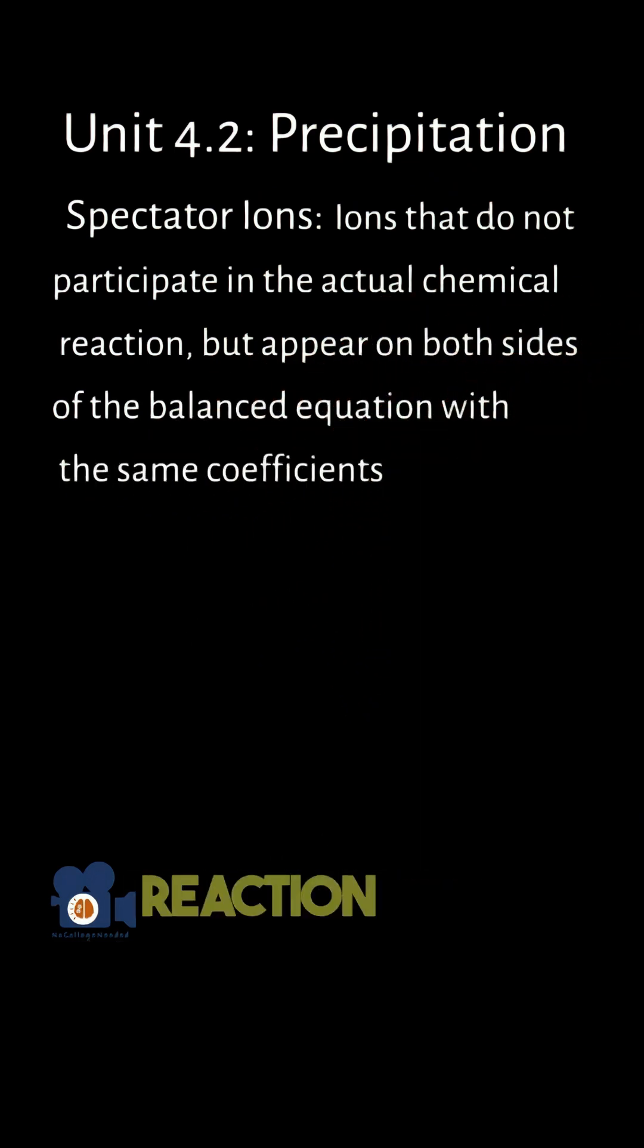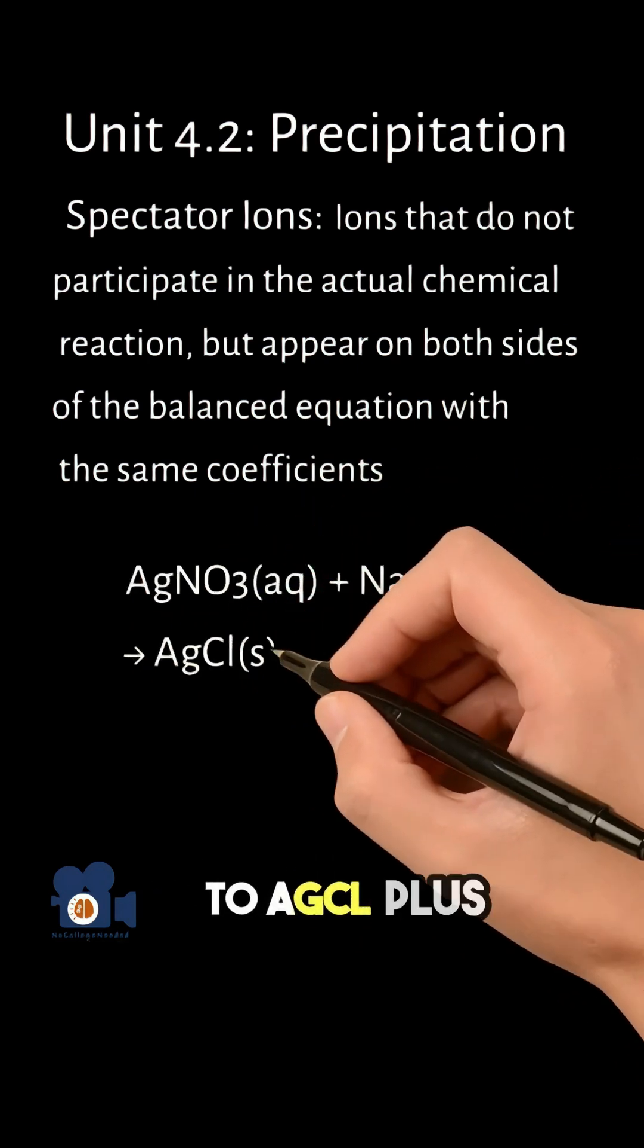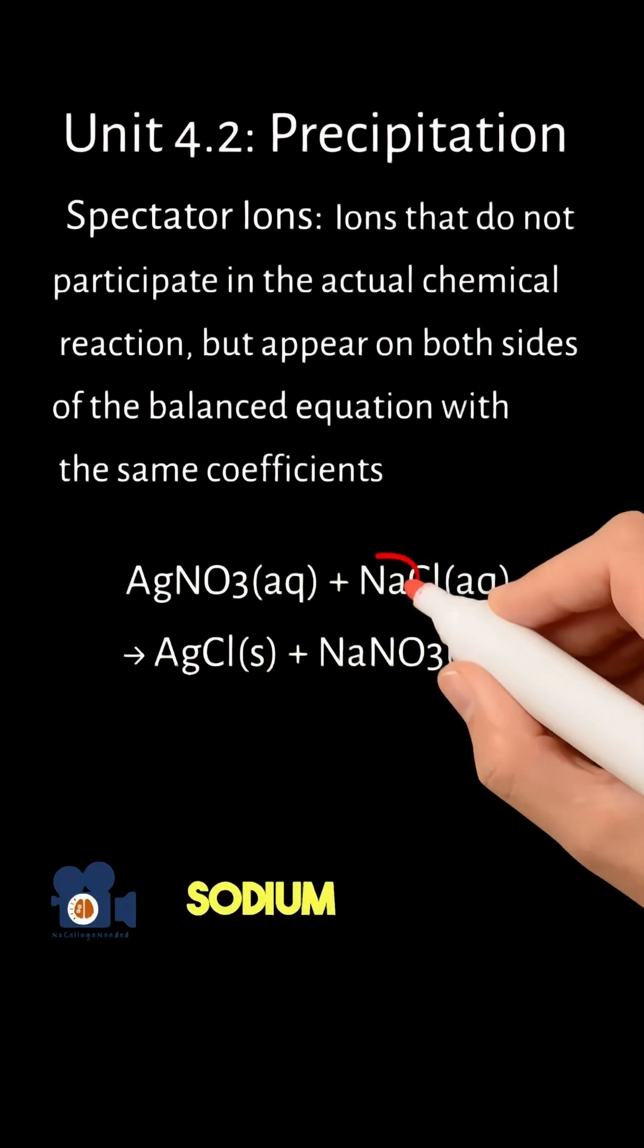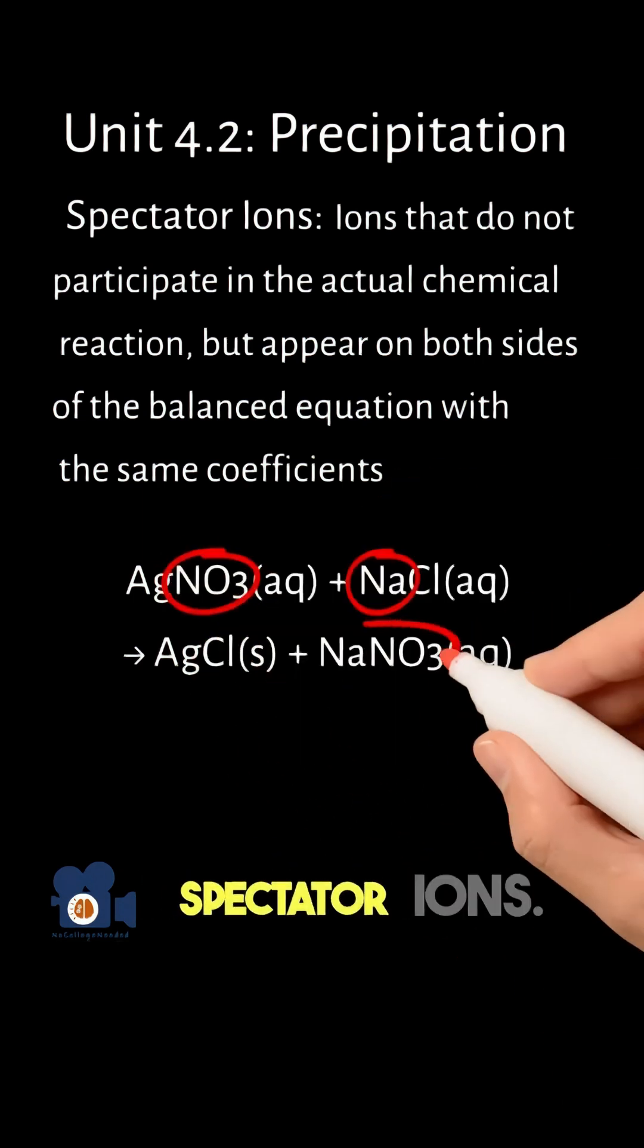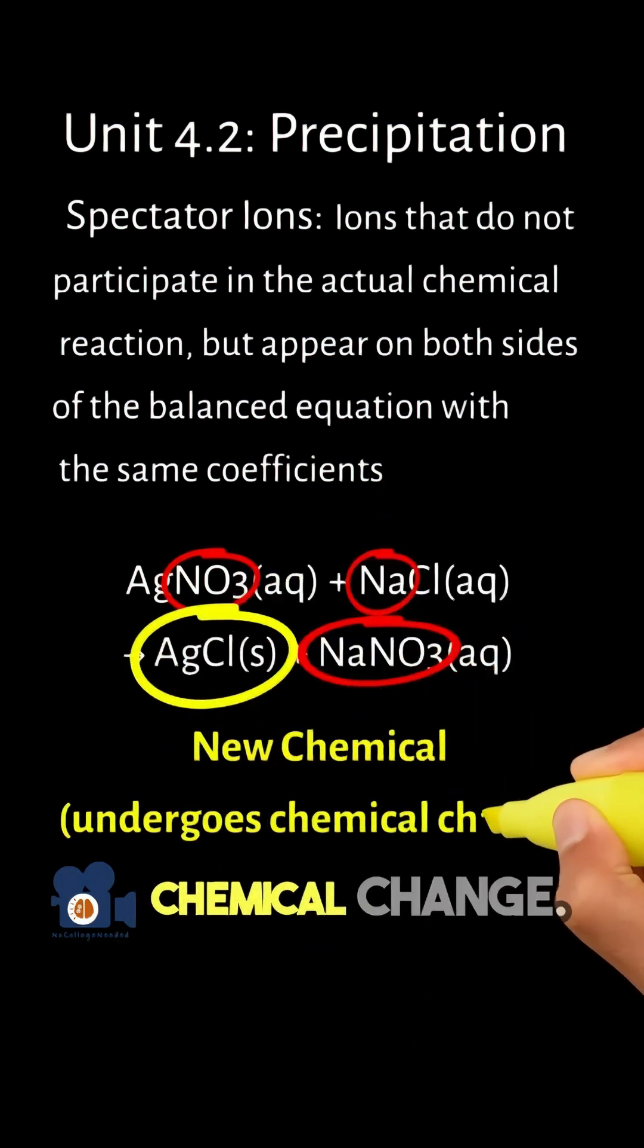in the double displacement reaction, AgNO3 plus NaCl going to AgCl plus NaNO3, the sodium and NO3 ions are spectator ions. They are present in both the reactants and products but do not undergo any chemical change.